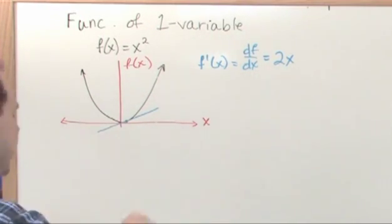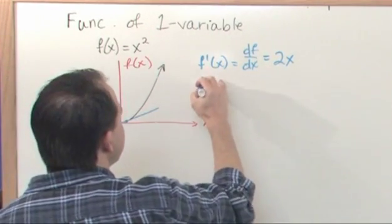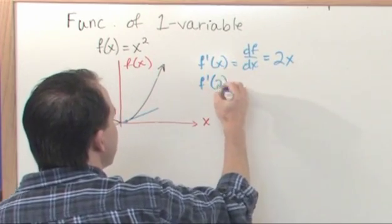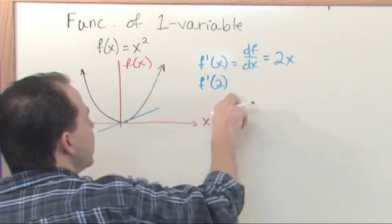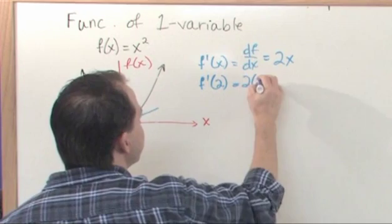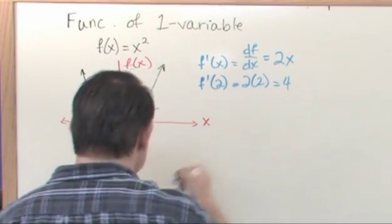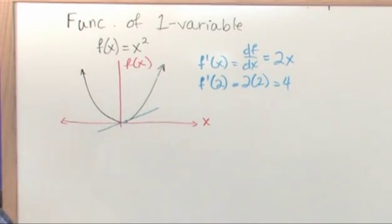And we already talked about this just a second ago, but if you're interested in the slope of this guy at the value of 2, then you just put this in here, and you'll get 2 times 2, and that will be 4. So you've calculated this derivative, and you've done that. What we're going to do is we're going to use this as a baseline, so to speak, to talk about more complicated functions.